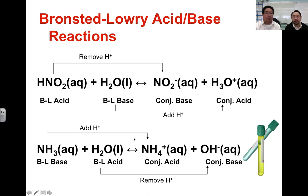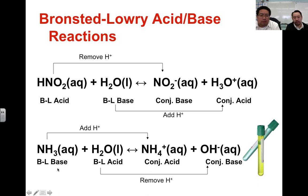Notice that the Bronsted-Lowry acid becomes a conjugate base, and the Bronsted-Lowry base becomes a conjugate acid. Also shown here with ammonia: after it gains hydrogen, it becomes protonated and forms a conjugate acid. And in this case, water loses a proton and becomes the conjugate base, the hydroxide ion.